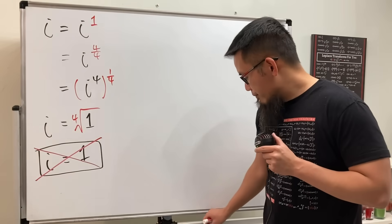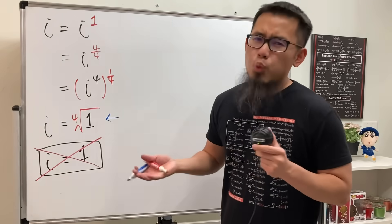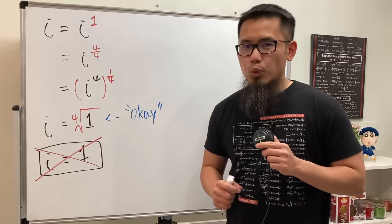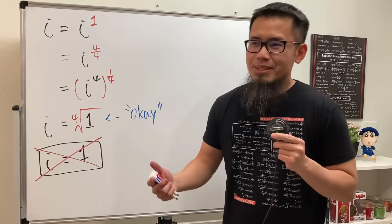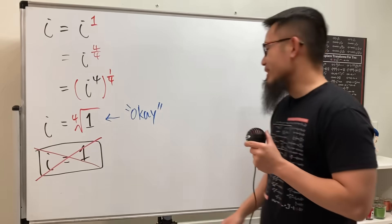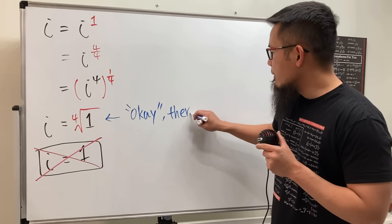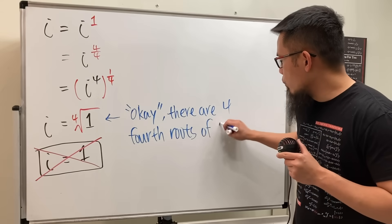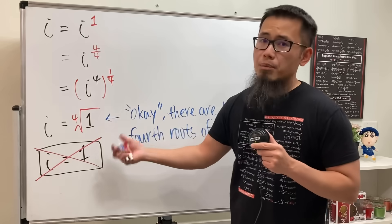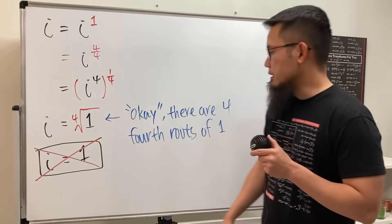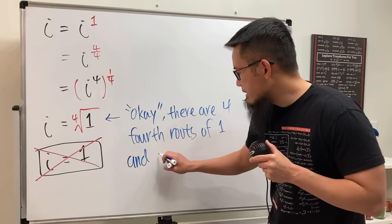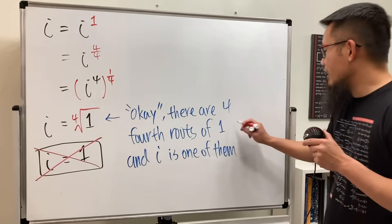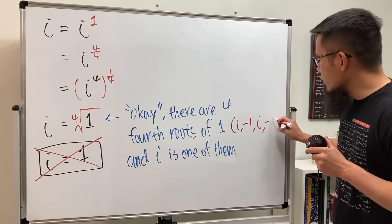Now let's look back. Is it okay for us to say I is equal to the 4th root of 1? Or maybe look at this backwards: the 4th root of 1 is equal to I. Well, the truth is, this is somewhat okay — in quotes. The reason is because there are, in fact, 4 fourth roots of 1. Especially when we are dealing with complex numbers, we shall find out all the possibilities. In fact, I is one of them. The 4 fourth roots are: 1, negative 1, I, and also negative I. And of course, I is one of them.